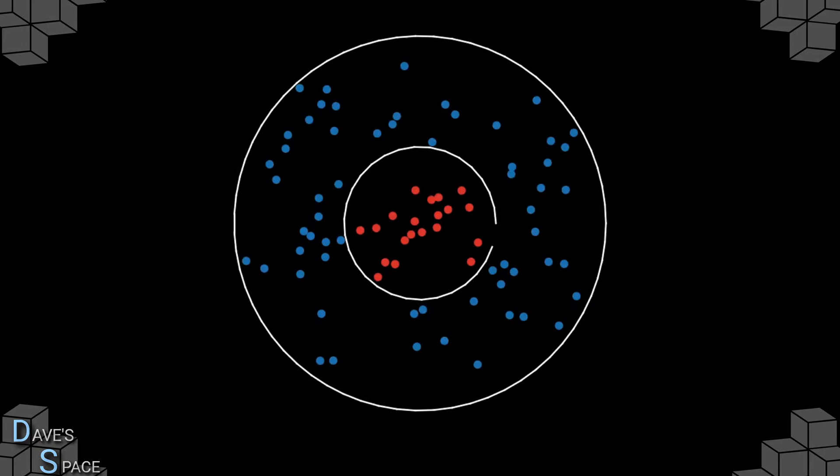Next, we have the same system as before, but we have placed the inner red particles inside an almost closed container. There is only a small gap on the right-hand side through which particles can escape. Watch what happens as we allow time to pass.